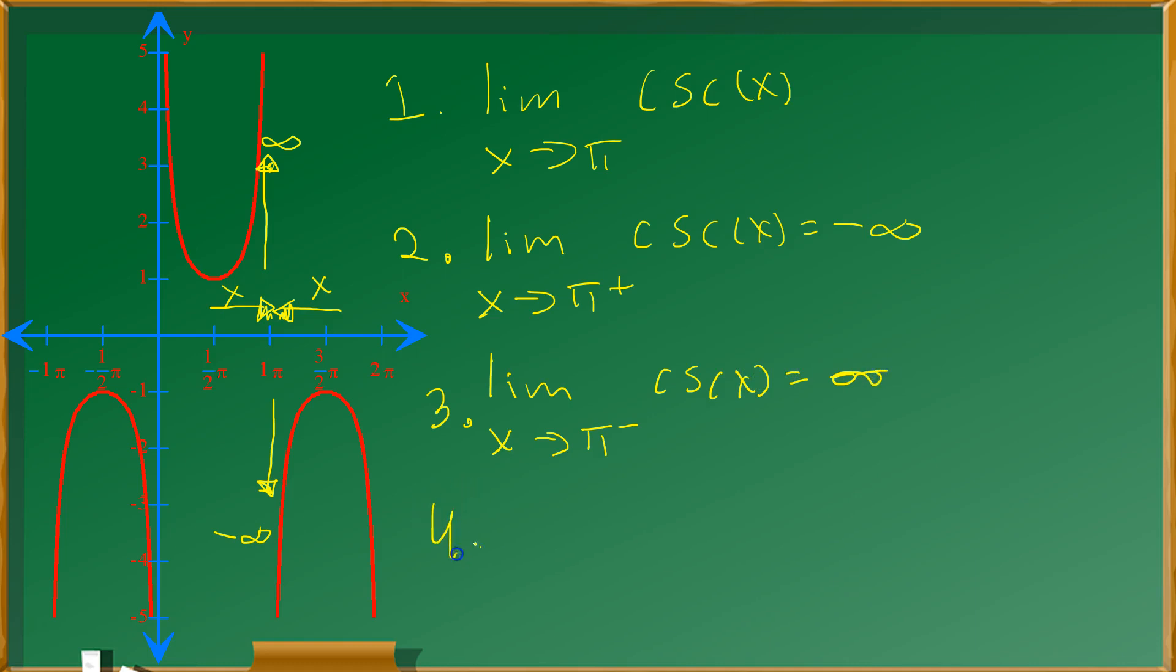So for that reason, lastly, we must conclude the following: that the limit as x approaches pi of cosecant of x does not exist. And the reason is simple.